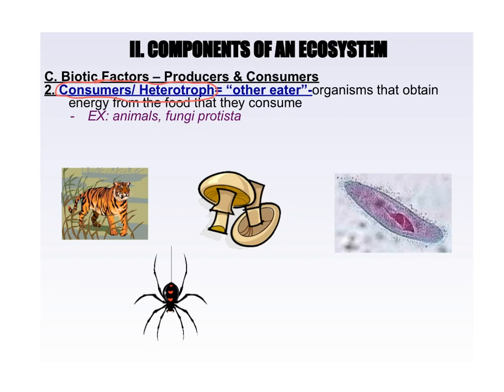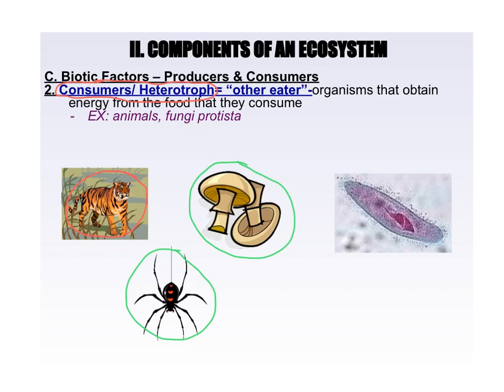Everybody knows lions and tigers — they have to eat in order to get their energy. Same thing with a black widow spider; it's got to catch insects in its web to get its energy. Now these mushrooms, they kind of look like plants, but they're not — they do not make their own food. They're decomposers, so they grow in areas where wood or other things are rotting and they eat that decaying matter. A paramecium is a single-celled organism that cruises around looking for little things in the water to eat. So these are all heterotrophs because they have to eat in order to get their energy.